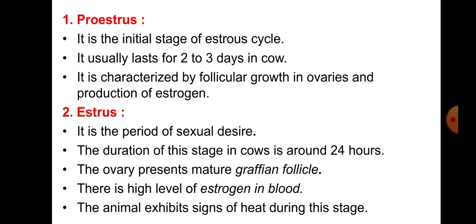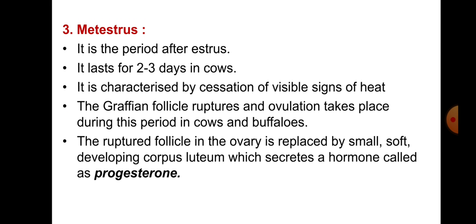The next stage is oestrus - it is the period of sexual desire, also called heat. The duration of this stage in cows is around 24 hours. The ovaries present mature Graafian follicles - the primary follicle develops into the Graafian or mature follicle. There is a high level of estrogen in the blood, and the animal exhibits visible signs of heat during this stage.